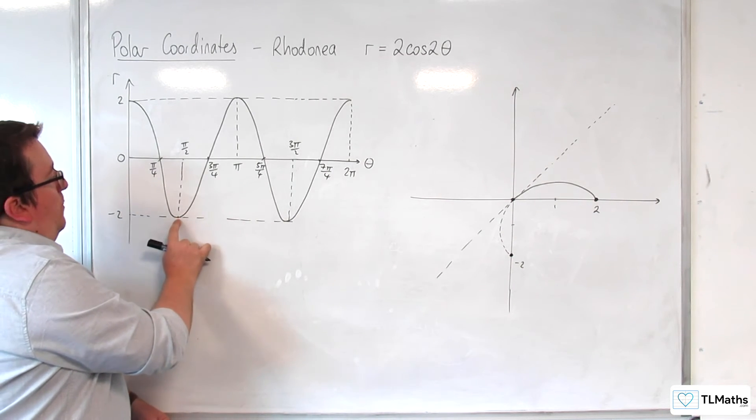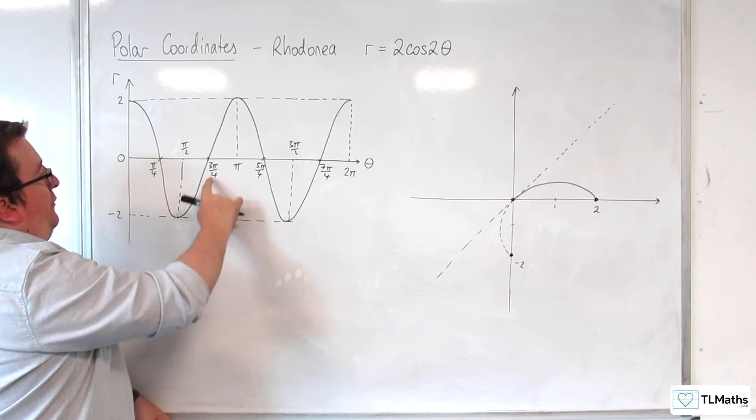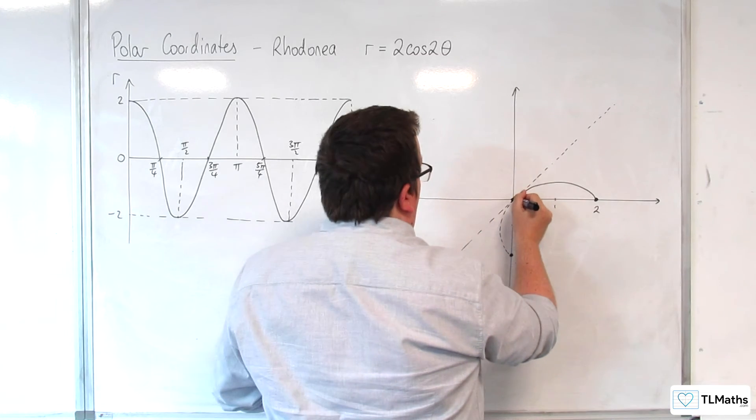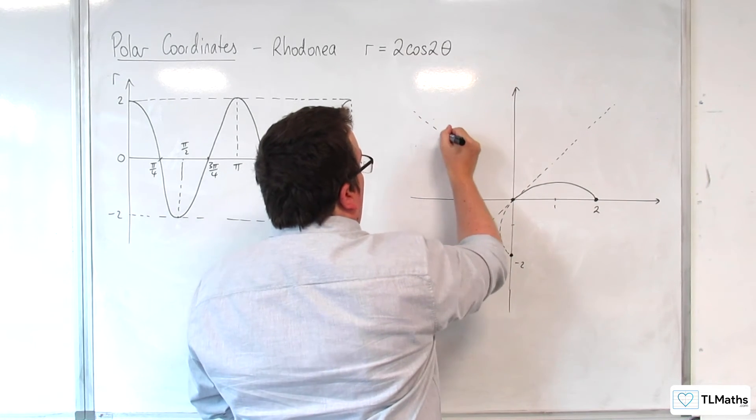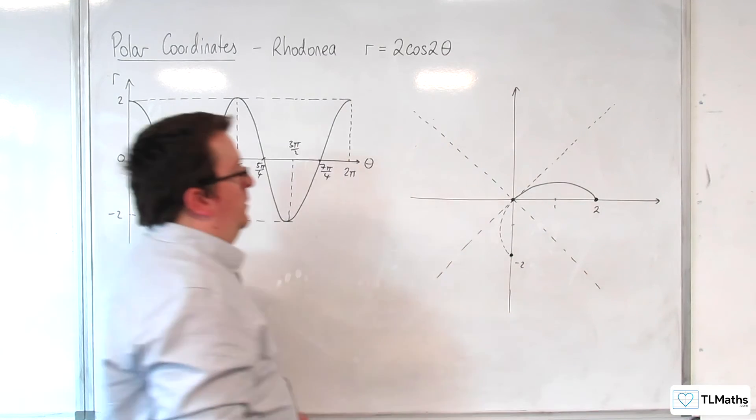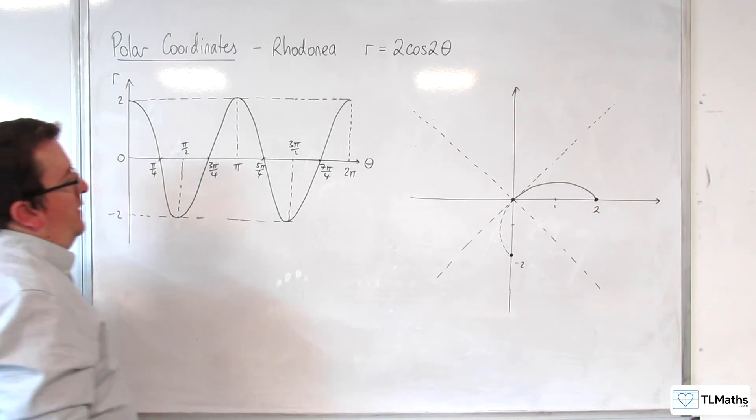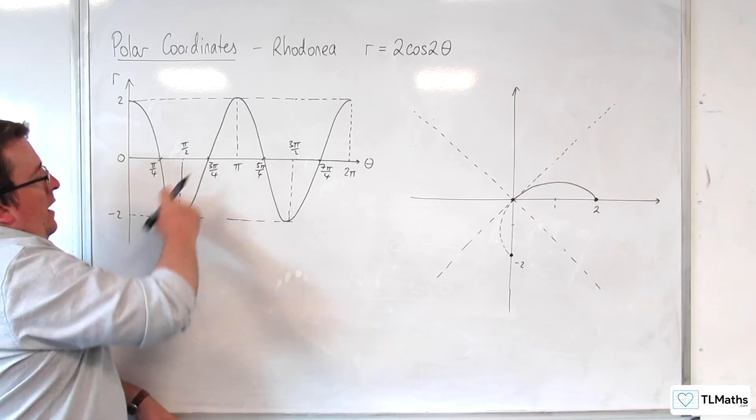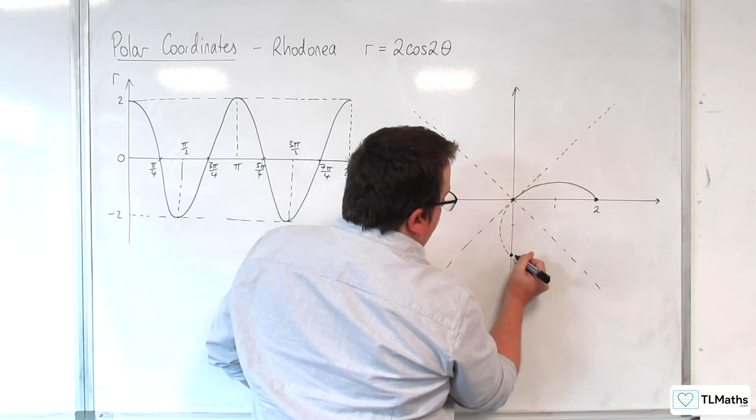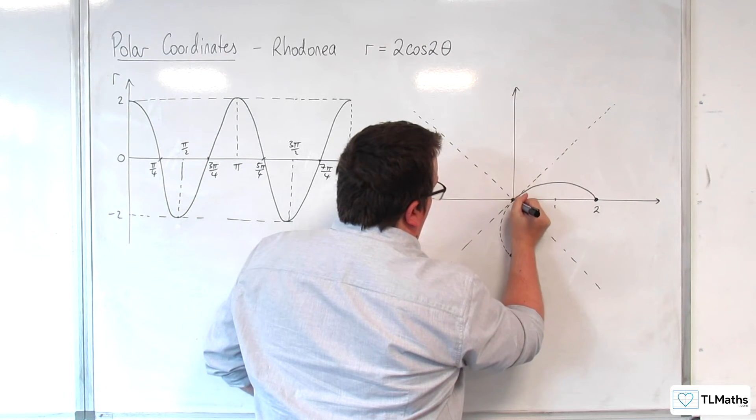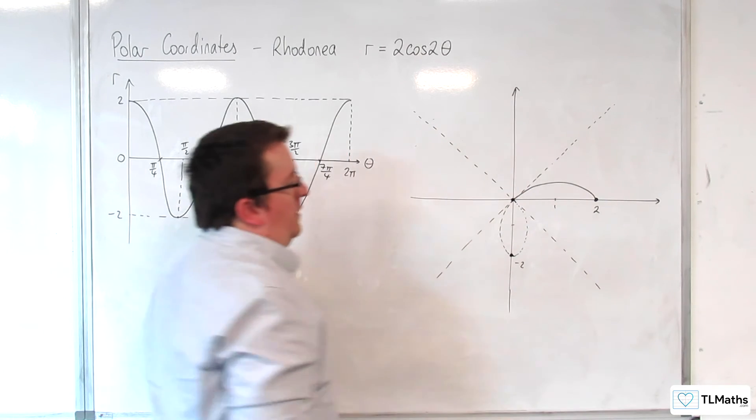Then, from pi over 2 up to 3 pi over 4, r is still negative. So we're going to come in at that angle, 3 pi over 4. r is back to 0. And so the curve comes back round, back up to 0, like so.